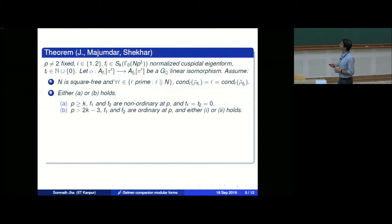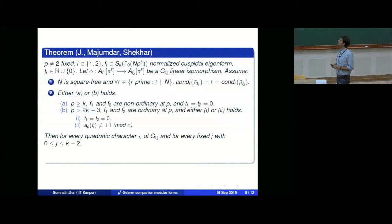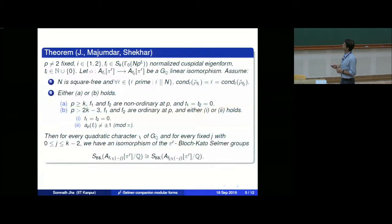On the other hand, if they are ordinary at p, we assume p > 2k−3 and either one of two conditions: either it is good reduction at p, or if it is not good, then the p-th Fourier coefficient should not equal ±1 mod π. Then for every quadratic character χ of G_Q and every j with 0 ≤ j ≤ k−2, we have an isomorphism: the π^r-Bloch-Kato Selmer group of A_{f_1}(χ·ω_p^{−j})[π^r] is isomorphic to that of A_{f_2}(χ·ω_p^{−j})[π^r] over Q.